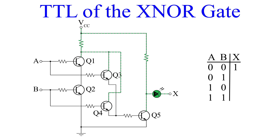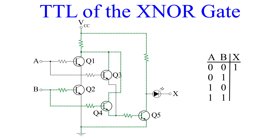Now we flip on B so that our inputs are A equals 0 and B equals 1. Transistors Q2 and Q4 both have a base bias. However, there is only voltage on the collector of Q4 from VCC. This means Q4 is turned on, applying a base bias to Q5. Q5 also has collector current which turns it on. With the emitter of Q5 connected directly to ground, the current is essentially shorted in that path and robs the LED of any current. So the output is 0.